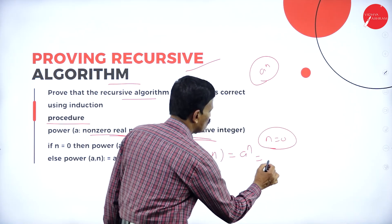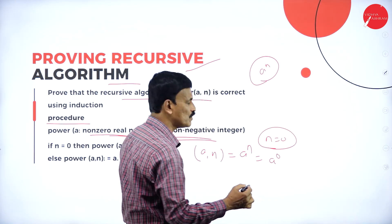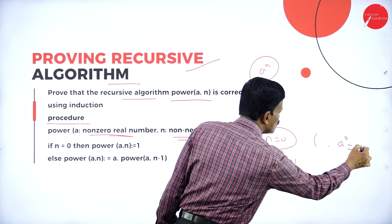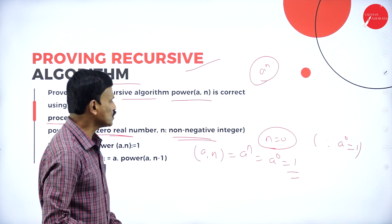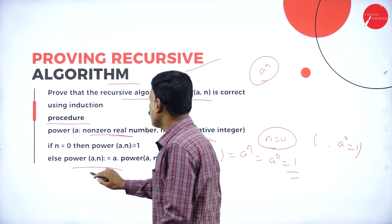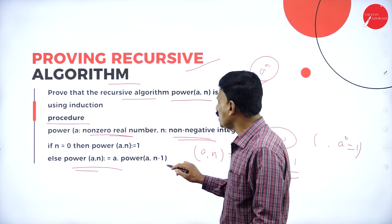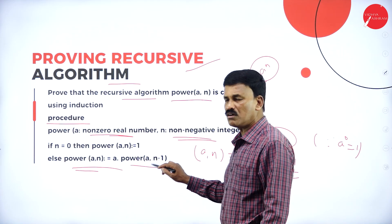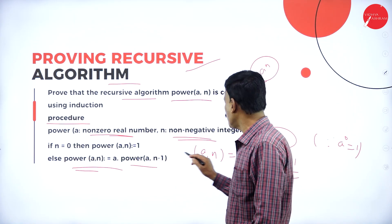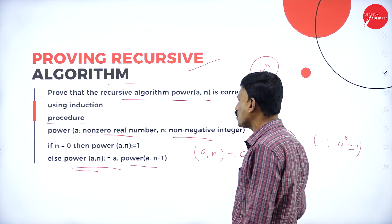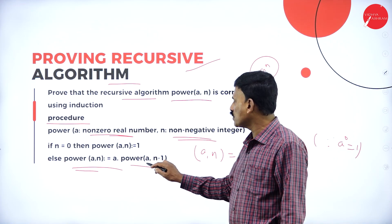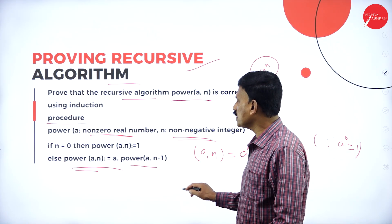If n = 0, then power(a, n) becomes a to the power of 0. Since any number to the power of 0 is always equal to 1, a to the power of 0 = 1. Otherwise, power(a, n) = a · power(a, n−1).